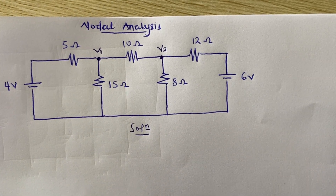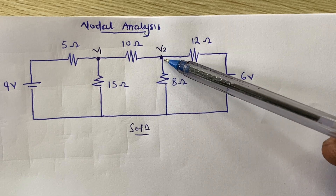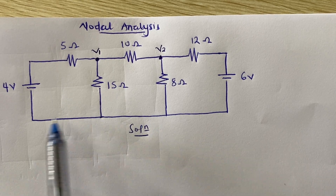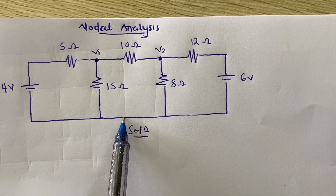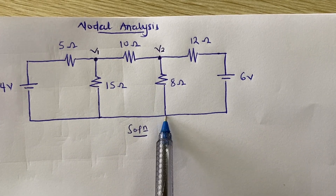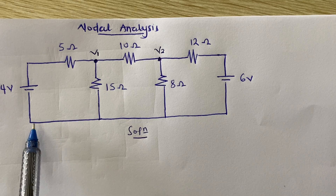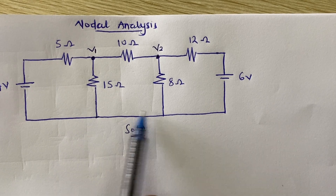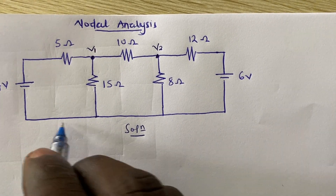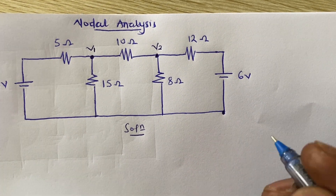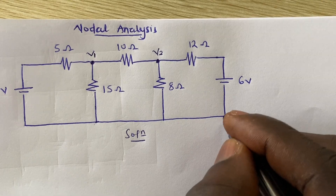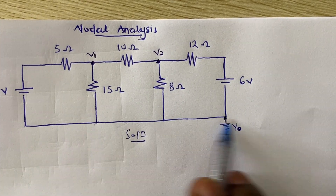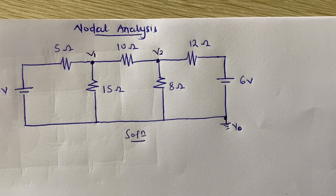Now when you look at the current that flowed here and also here, at the bottom there is no element, so current always wants the easy path. We can squeeze the downside to give us just one single reference node. We call that the reference node and we assign it V0, which is equal to zero, because there is no voltage there.